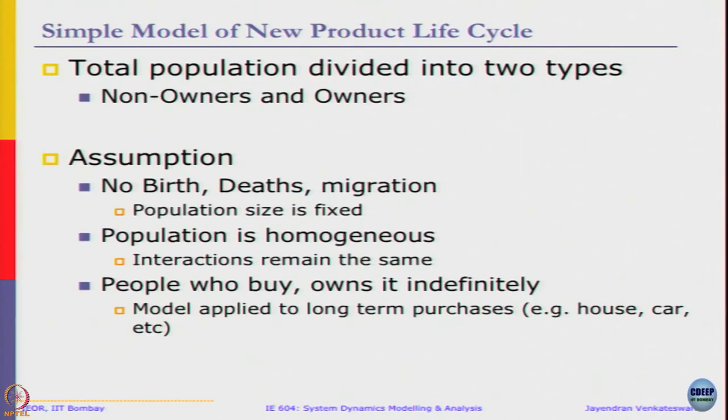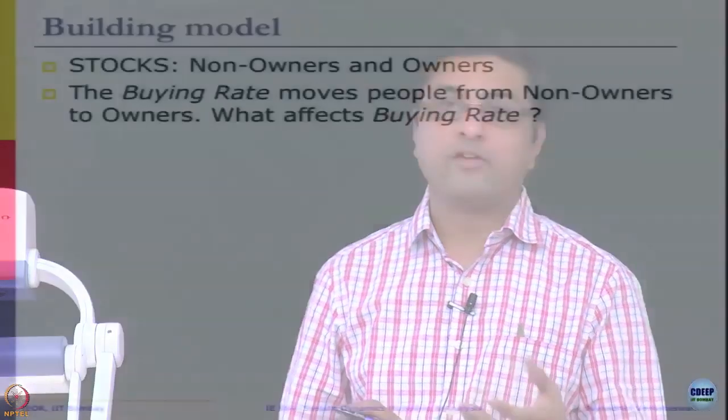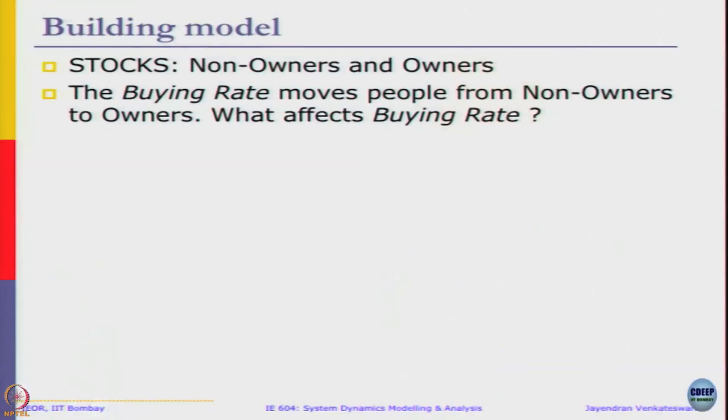With that let us in building this model as I told let us assume two stocks, one we have non-owners another we have owners. Non-owners become owners if they buy the product. The buying rate you can define a simple parameter called as buying rate moves the people from non-owners to owners. That is the rate which affects the non-owners and moves them into owners. Question is what affects the buying rate.